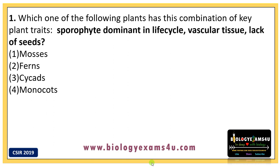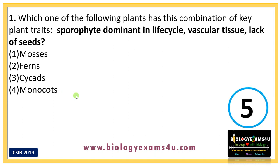Question one: Which one of the following plants has this combination of key traits — sporophyte dominant in life cycle, vascular tissue, and lack of seeds? Options are: one, mosses; two, ferns; three, cycads; and four, monocots. This is a question that can be attempted by all postgraduates in life sciences. I will give you five seconds to make a guess.